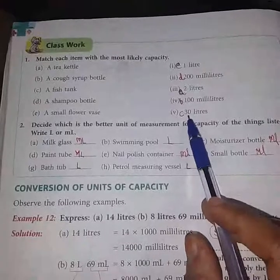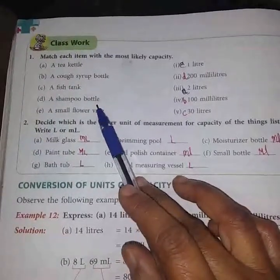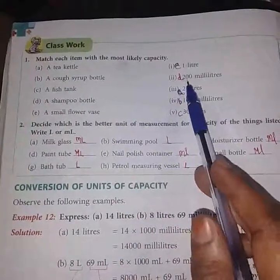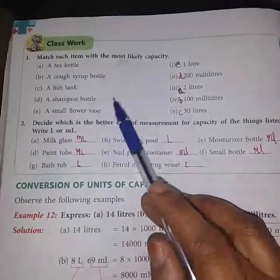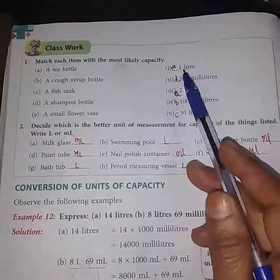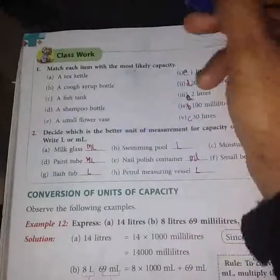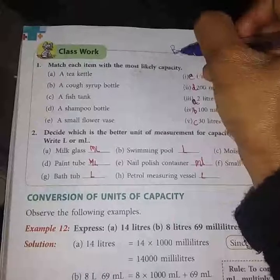Then a shampoo bottle, it must be of 200 milliliters, and a small flower vase it will be of 1 liter. All these questions you have to solve in book only, don't do anything in your copies.